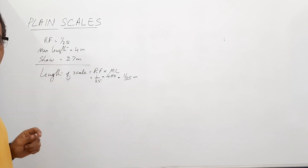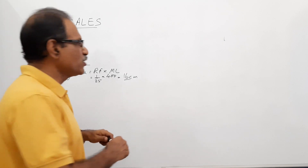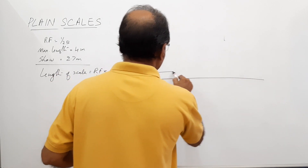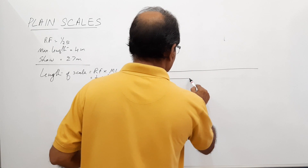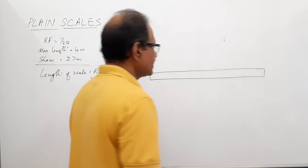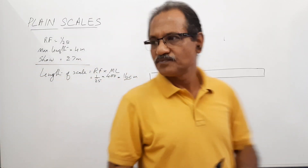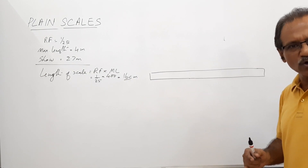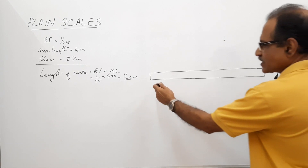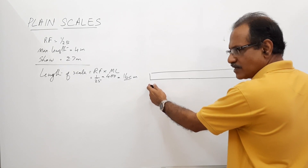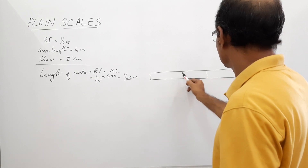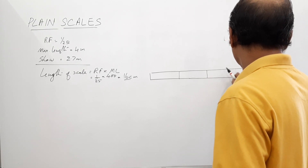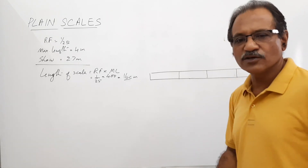Length of scale is 16 centimeters. We will draw the scale by constructing a small rectangular strip whose length is 16 centimeters. The width can be any width — I recommend about 1 centimeter. This strip represents 4 meters. I divide it into 4 equal parts.